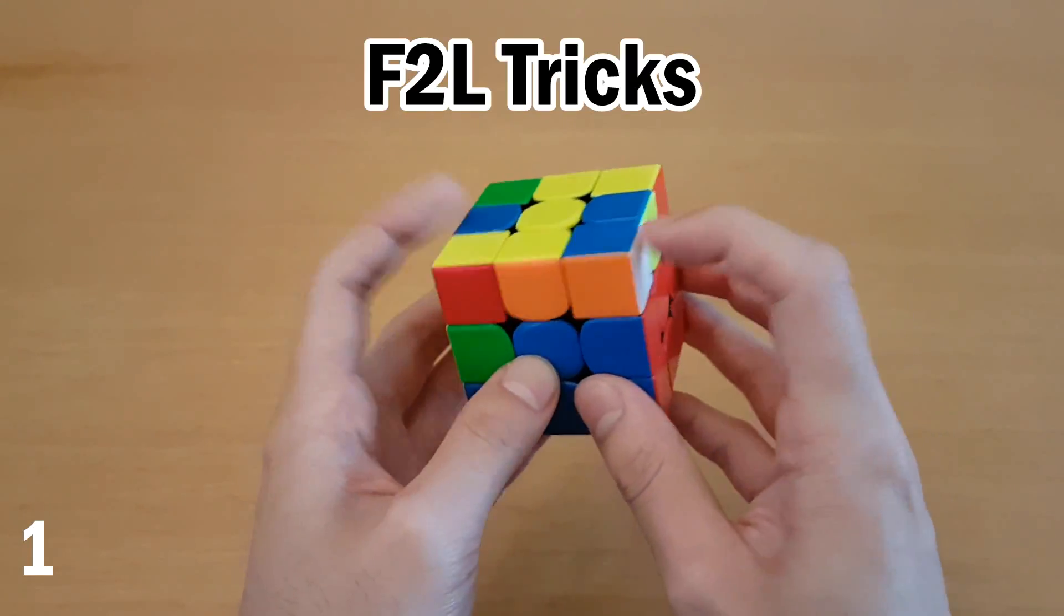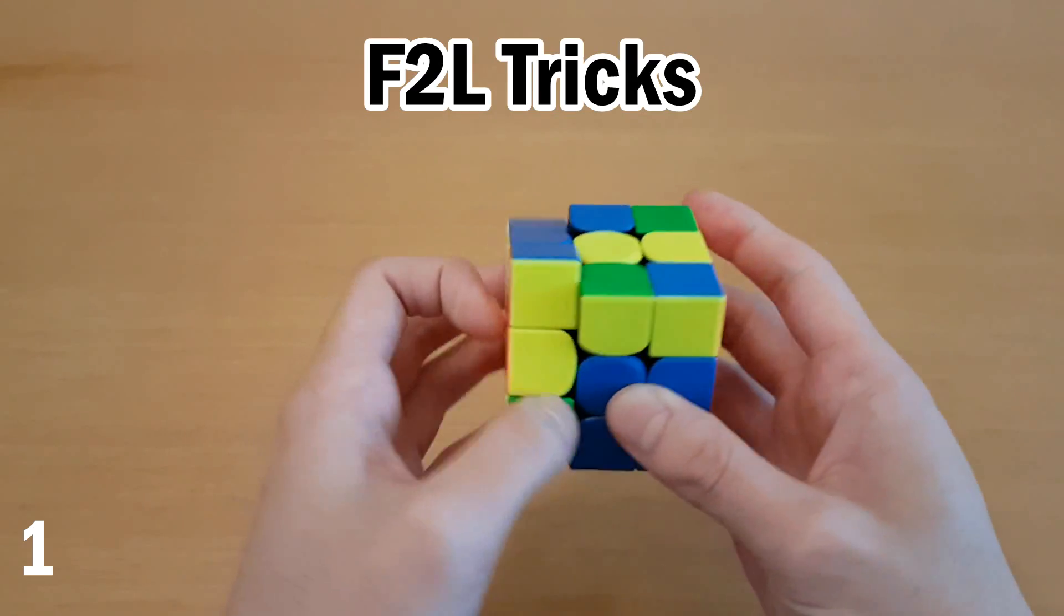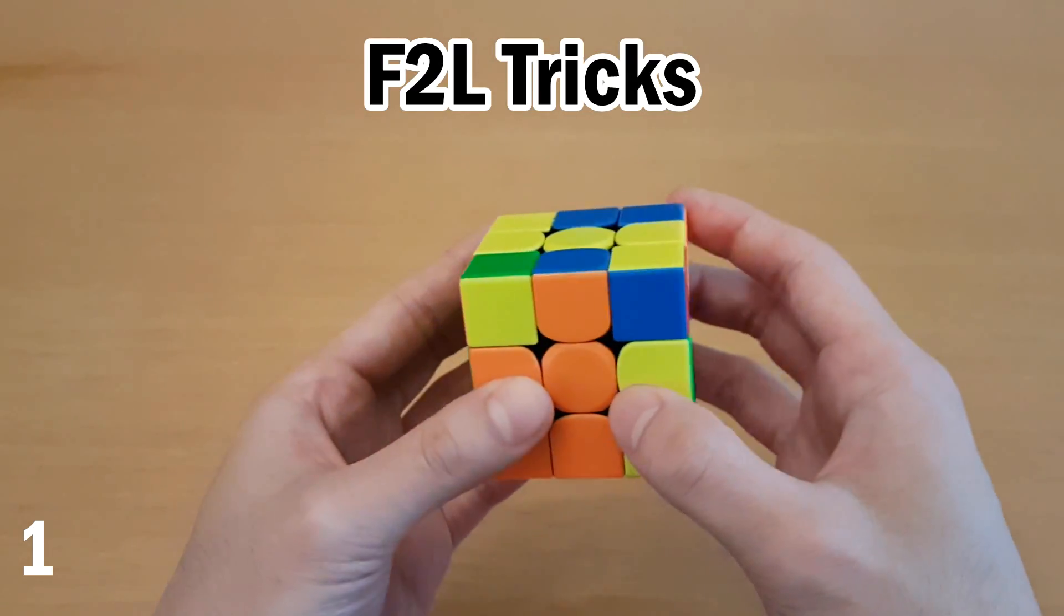Hey guys, today we have more F2L tricks such as this pair from here. Normally you would have to rotate and then pair them up like this. But instead you can save a rotation and do something faster, which is like this.